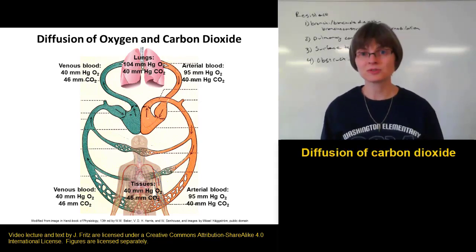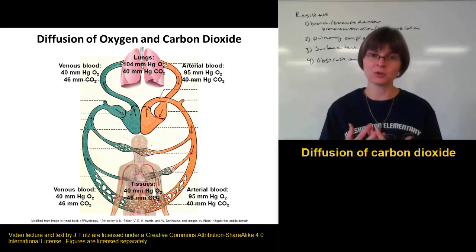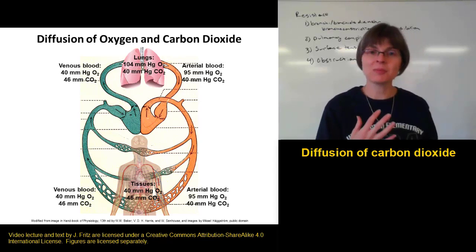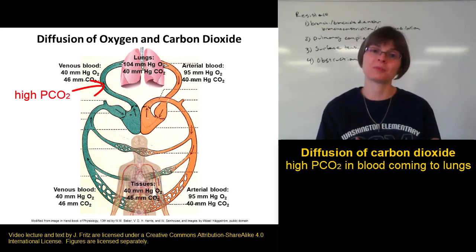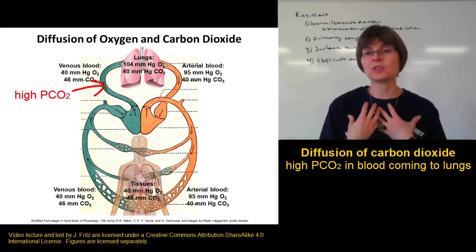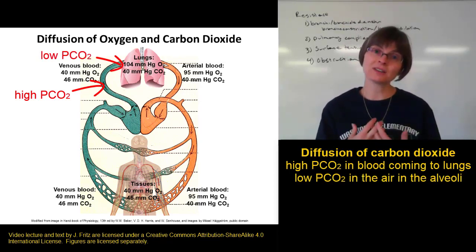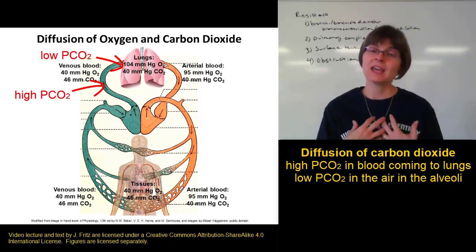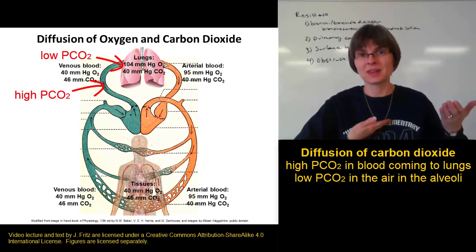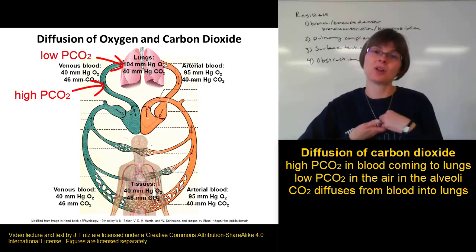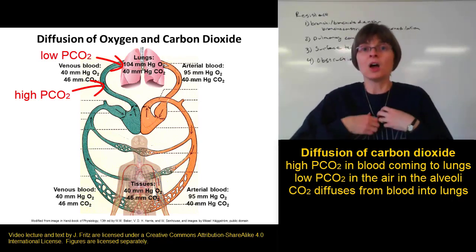If we look at CO₂, we see the same sort of situation. When our blood comes back from the body, it's high in carbon dioxide — a high partial pressure of CO₂ is about 46 millimeters of mercury. In our alveoli, we have a low concentration of CO₂. If we have high CO₂ in the blood and low CO₂ in the lungs, the CO₂ diffuses from the high concentration in the blood into the low concentration in the alveoli, so we can breathe it out.